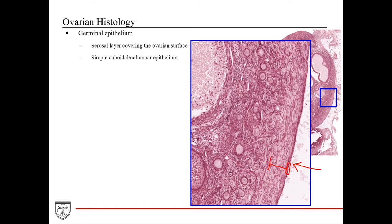When this layer was first discovered, these cells were actually thought to be the germ cells themselves that gave rise to the oocytes, hence the term germinal epithelium. We now know this is actually not the case. Unfortunately, this name stuck around, so it is important to know that this germinal epithelium is actually a misnomer.